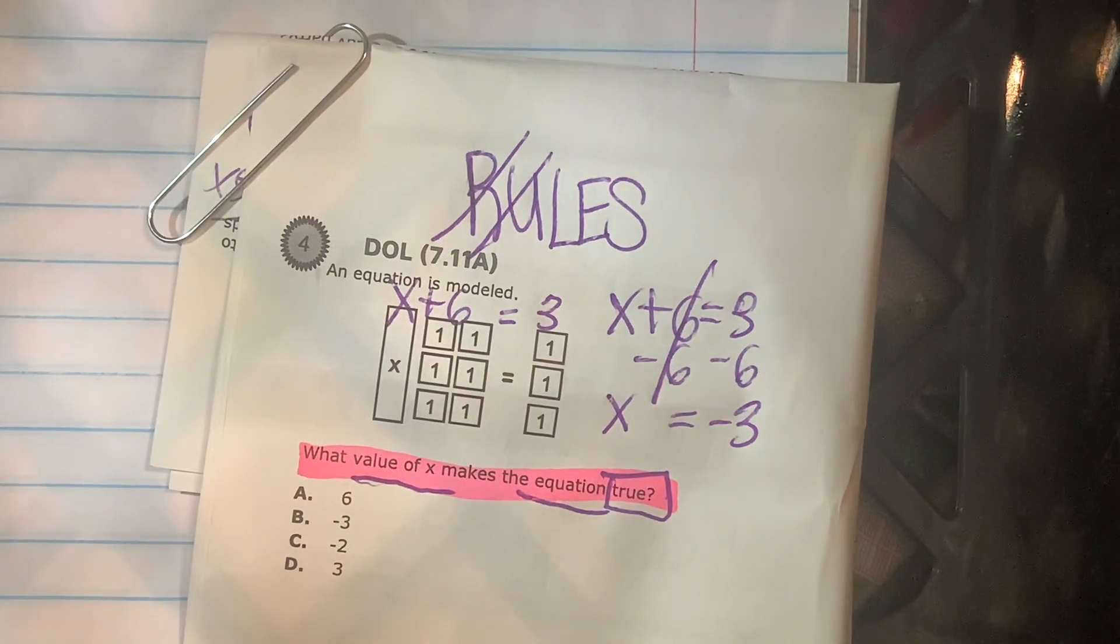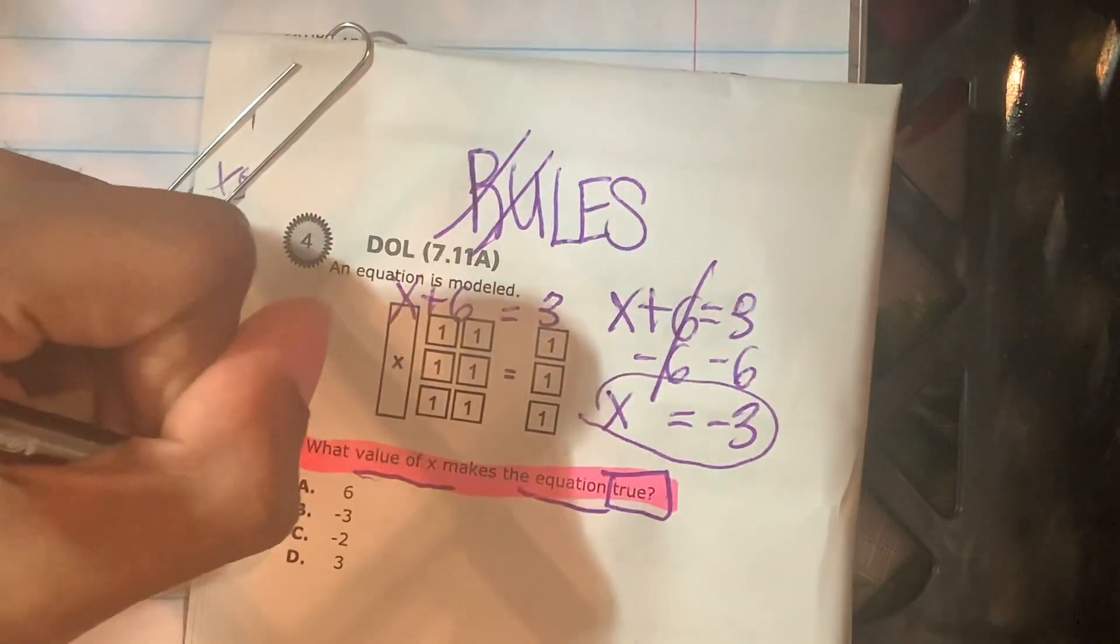All right, and that's it. That's our answer, x equal to negative 3. The answer is B.